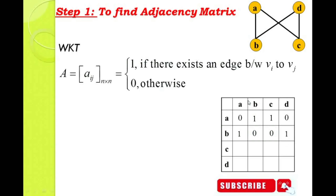For the third row — C to A: there is one edge, assign value 1. C to B: there is no edge, assign value 0. C to C: self-loop, assign 0. C to D: there is one edge, assign value 1. For the fourth row — D to A: no edge, so 0. D to B: one edge, assign value 1. D to C: one edge, assign value 1. D to D: self-loop, no edge, assign value 0.